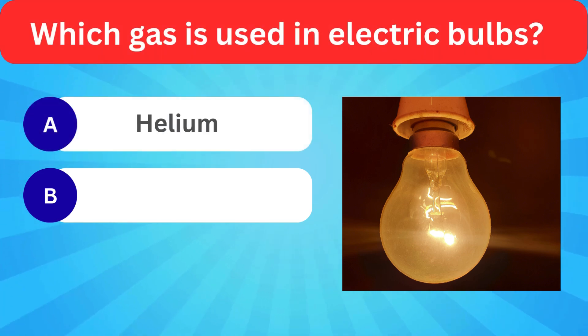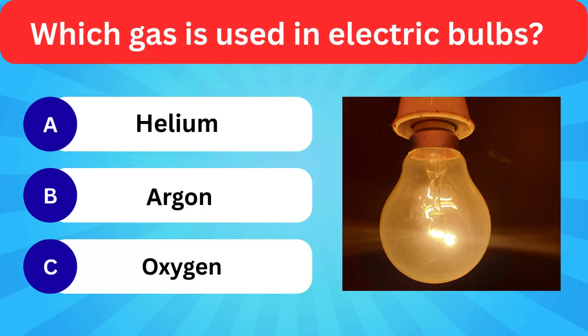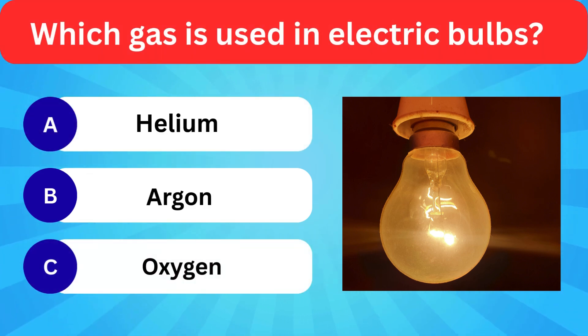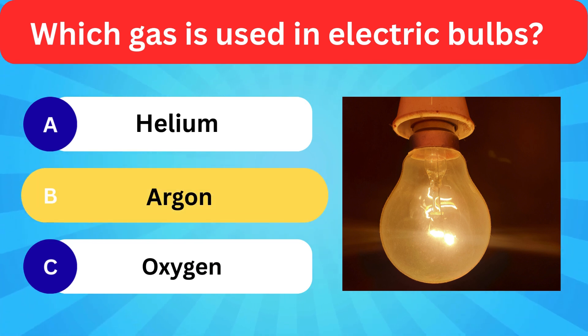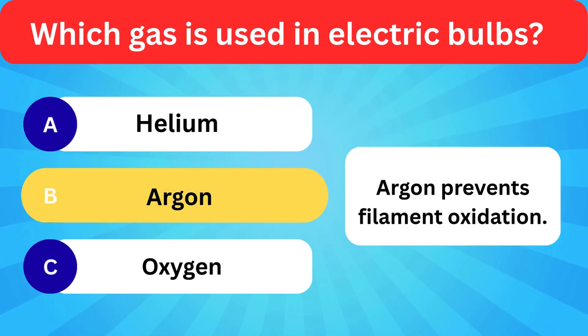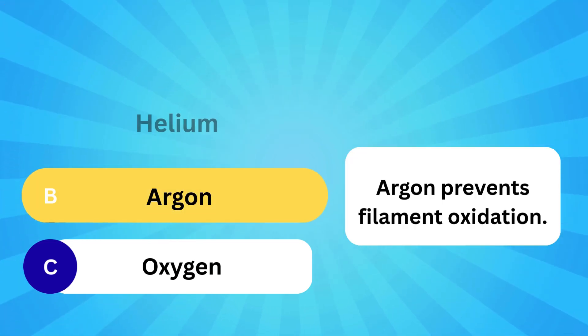Which gas is used in electric bulbs? Options: Helium, Argon, Oxygen. Correct answer is argon. Argon prevents filament oxidation.